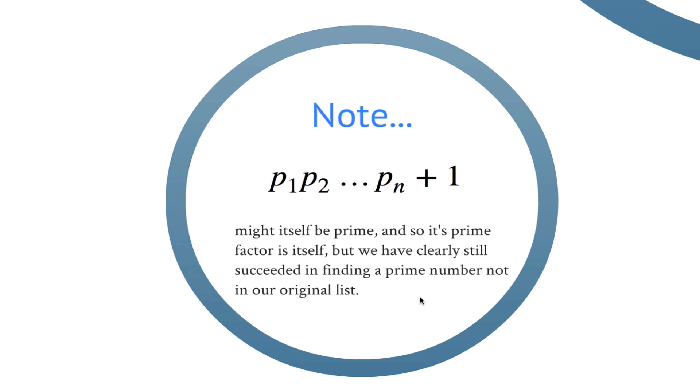As a quick side note, observe that the number p1 multiplied by p2 multiplied by all the way up to pn plus 1 might itself be prime, and so its prime factor is itself, but clearly we've still succeeded in finding a prime number that was not in our original list.